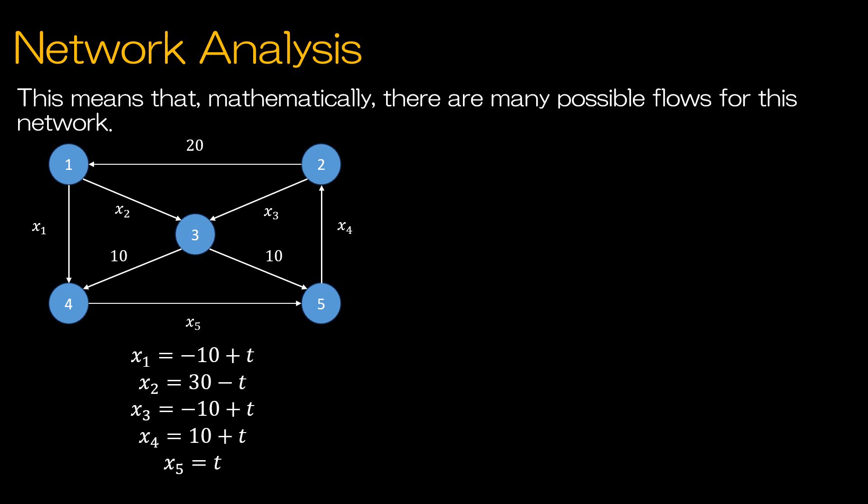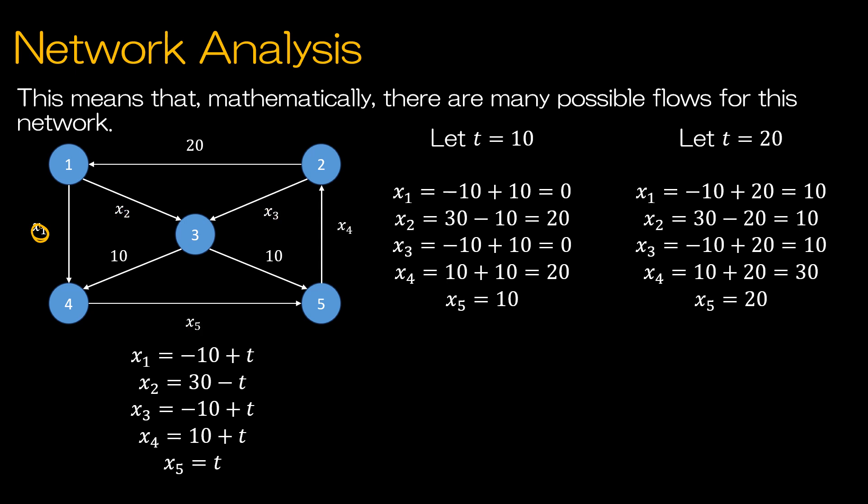Mathematically, that means there are many possible flows for the network, and all those possible flows are determined by the value I set for t. Let me choose 10 as t. If I let t be 10, then x1 has a flow of 0, x2 has a flow of 20, x3 has a flow of 0, x4 of 20, and x5 of 10. Mathematically, that works. I could also let t be 20, and those flows would be different, but it still works out in terms of the equation. However,